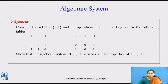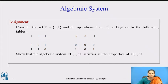As you have seen a number of examples explaining what is an algebraic system along with its properties, try to solve this assignment. Consider the set B = {0, 1} and the operations + and × on B given by the following tables. The tables show the results of performing addition and multiplication on elements 0 and 1.